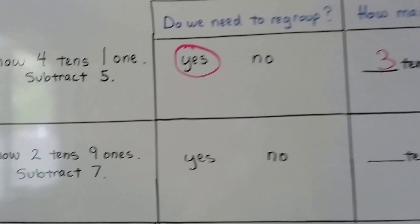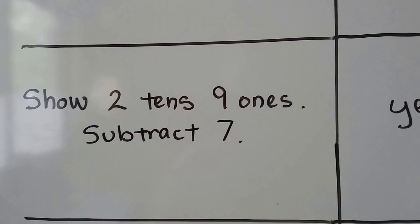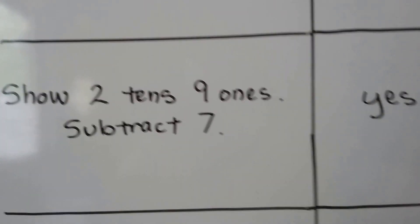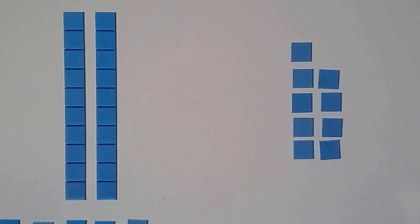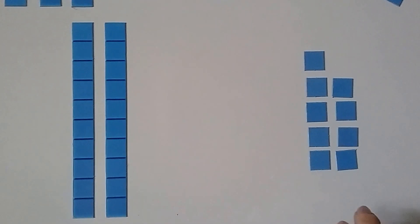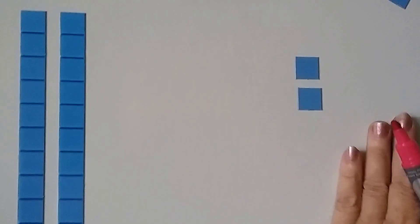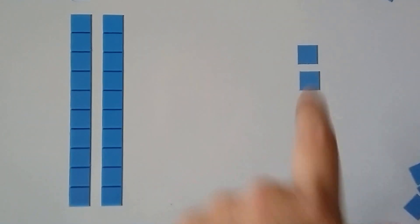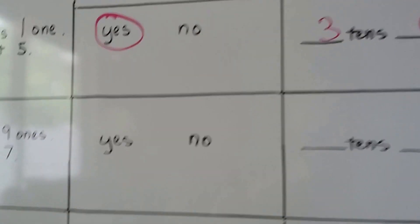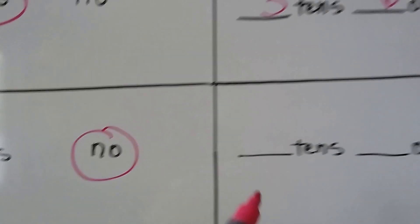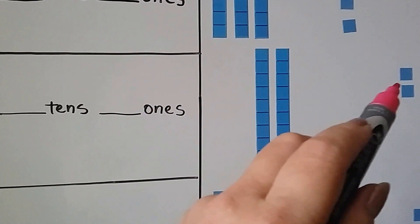Let's try that again. It says show 2 tens and 9 ones and subtract 7. So we need to show 2 tens and 9 ones and we need to subtract 7. Do we need to regroup some of the tens to take 7 away? No, not this time. We have 9 here. We can take 7 away: 1, 2, 3, 4, 5, 6, 7. How many are left? We're left with 2 tens and 2 ones. Did we need to regroup? Nope. 2 tens and 2 ones.